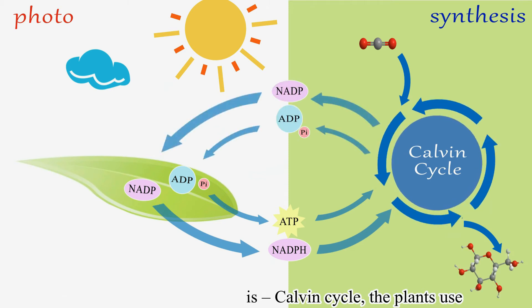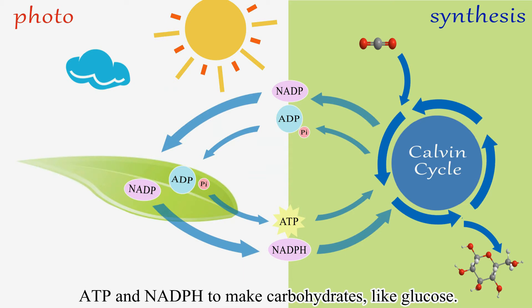Calvin cycle: the plant uses ATP and NADPH to make carbohydrates like glucose.